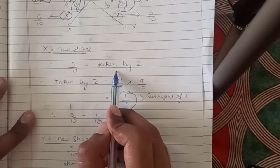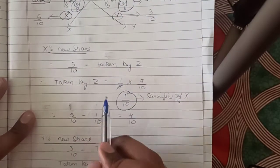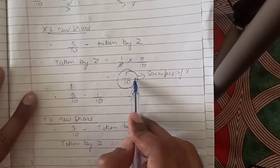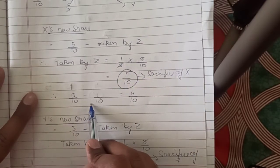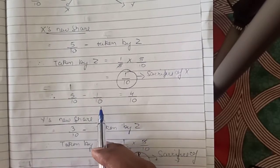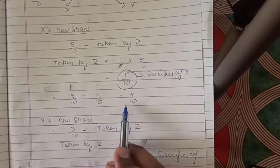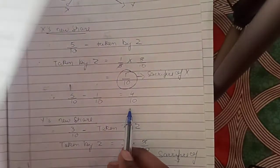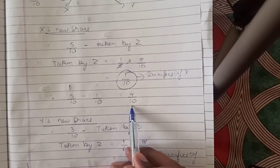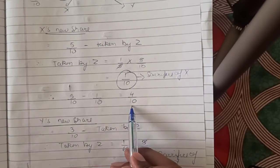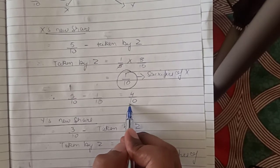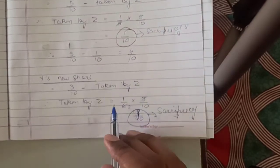X's new share is 4/10. Now for Y: Y's old share was 3/10. Z has taken 1/6 of Y's share. Taken by Z from Y = 1/6 × 3/10 = 3/60 = 1/20. So Y's sacrifice is 1/20.